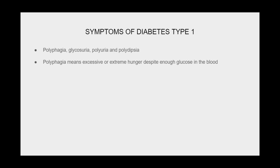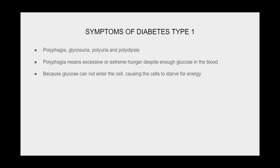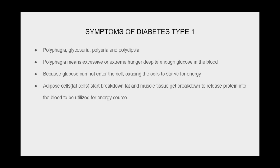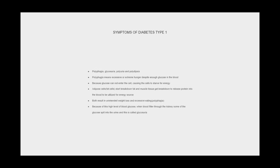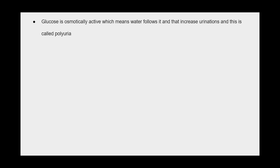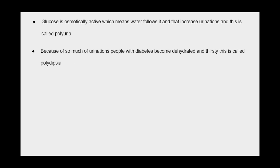Polyphagia means excessive or extreme hunger despite enough glucose in the blood, because glucose cannot enter the cell, causing cells to starve for energy. Adipose (fat) cells start breaking down fat, and muscle tissue breaks down to release protein into the blood for use as an energy source — both resulting in unintended weight loss and excessive eating. Because of high blood glucose levels, when blood filters through the kidney, some glucose spills into the urine — this is called glycosuria. Glucose is osmotically active, meaning water follows it, increasing urination — called polyuria. This excessive urination causes dehydration and thirst — called polydipsia.